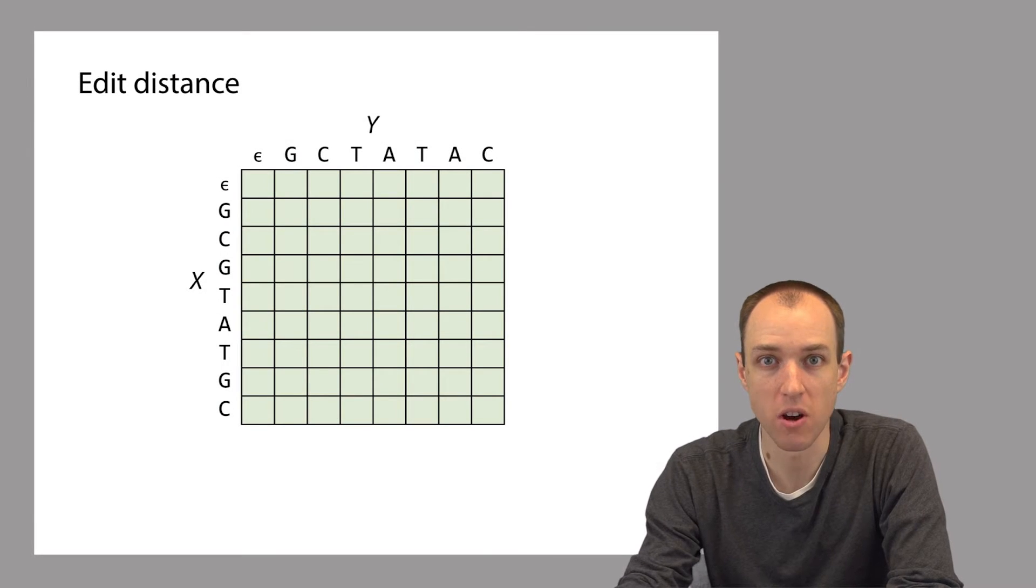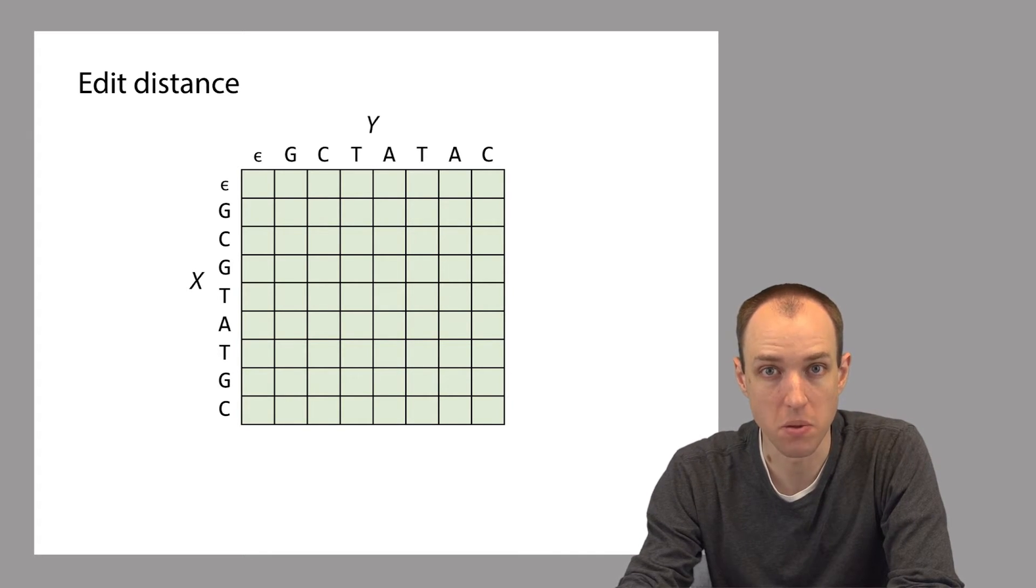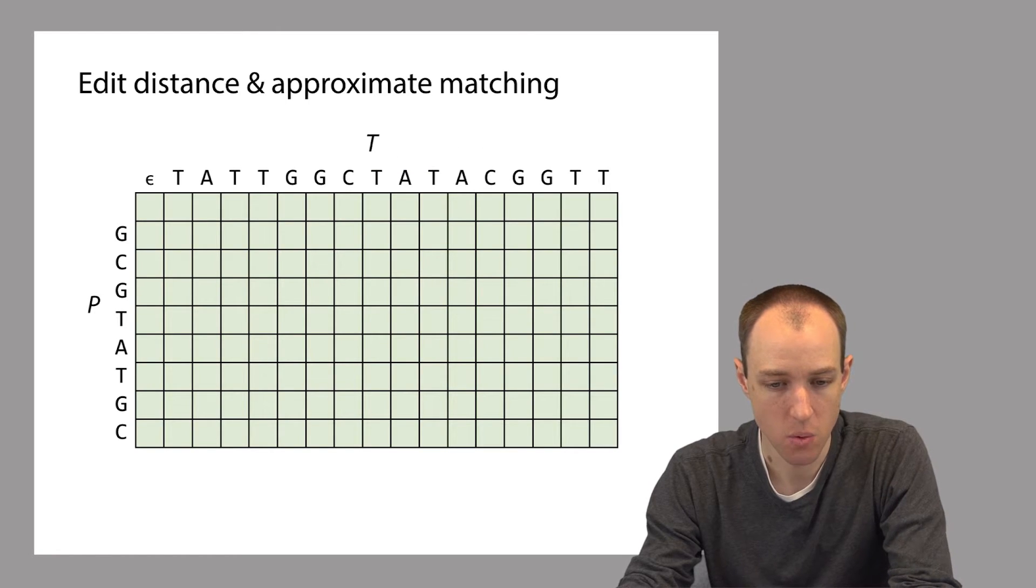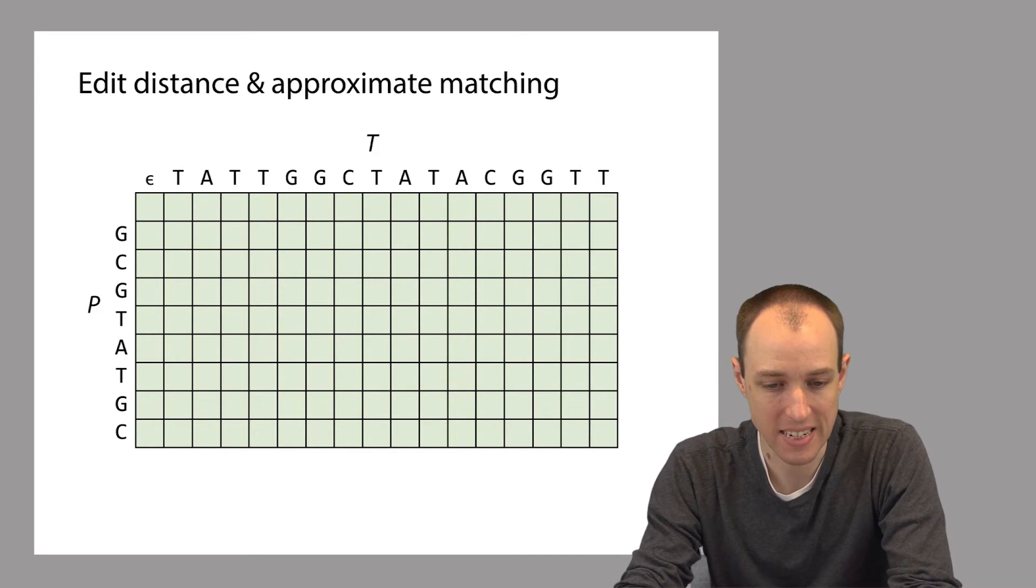Shown here is the matrix we talked about in the previous lecture for finding the edit distance between X and Y. The characters of X are labeling the rows of the matrix and the characters of Y are labeling the columns. But now we're going to imagine a new kind of matrix where the rows are labeled with characters of our pattern P and the columns are labeled with characters from our text T.